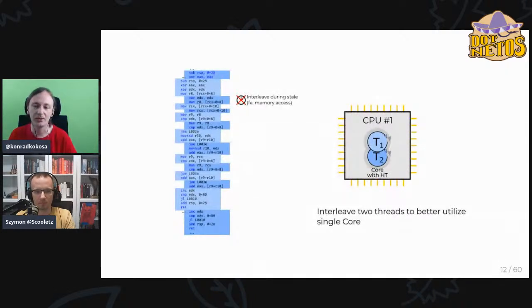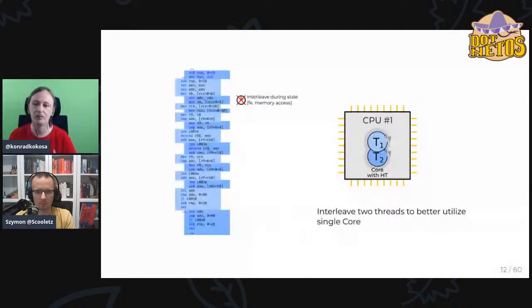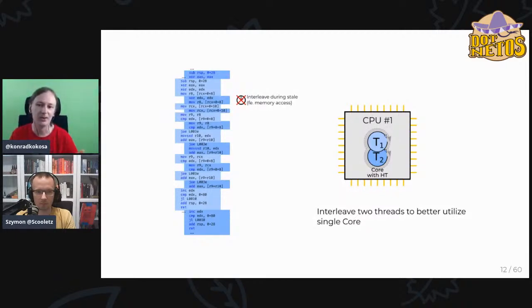These hyper-threads are not truly parallel — it's more concurrency simulating parallelism by executing an interleaved sequence of two threads. They share even more, including the highest-level caches. But it is really beneficial, and modern operating systems are fully aware of this, so they try to schedule threads accessing similar data onto the same physical core, because those threads will share data from the caches.